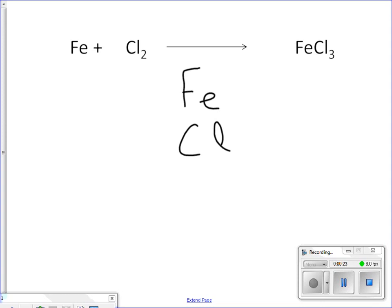The next step is to look at how many of each atom we have. Remember, when you're balancing chemical equations, you're not worried about the number of molecules. You're trying to balance the number of each type of atom.